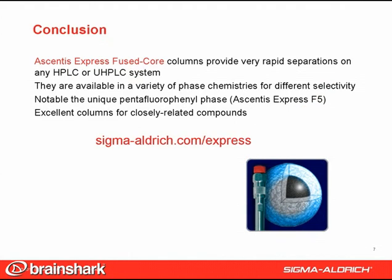Ascendis Express fused core columns are well-known for providing very rapid, highly efficient separations on any HPLC or UHPLC system. The example shown here for phytochemicals from grapefruit juice demonstrated the power of bonded phase chemistry to separate closely related, structurally similar compounds. Ascendis Express C18 gave adequate separation of the compounds of interest, but an even better separation with increased resolution and selectivity was obtained with the Ascendis Express F5 phase, attesting to the greater flexibility of this unique pentafluorophenyl stationary phase. The C18-F5 column combination provided elution order reversal, an important benefit for trace analysis.